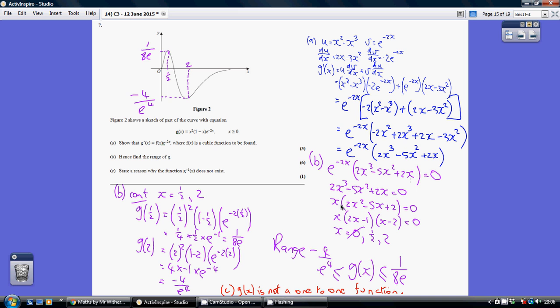Factorizing, taking out the x, and then further factorizing this quadratic, I get values of x being 0, a half, and 2. Obviously 0 is this one—I don't want that one. Half is at the maximum and 2 is at the minimum.